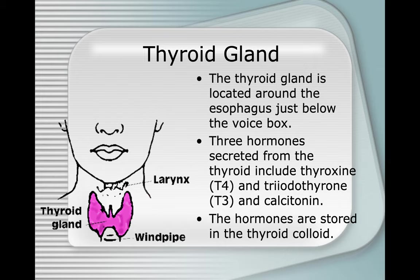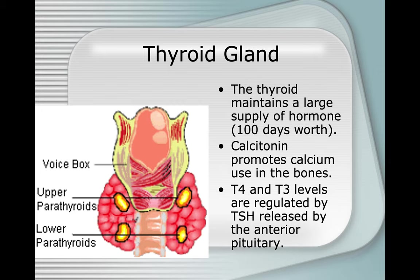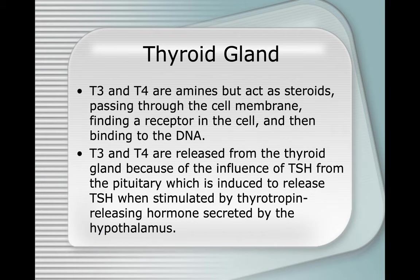The thyroid gland is located around your esophagus, just below your voice box. Three hormones are secreted from the thyroid: thyroxin T4, triiodothyronine T3, and calcitonin. These are stored in the thyroid colloid, and the thyroid maintains about 100 days' worth of hormones. Calcitonin promotes calcium use in the bones. T3 and T4 levels are regulated by TSH from the anterior pituitary. T3 and T4 are amines but act like steroids, passing through the cell membrane, finding a receptor inside the cell, and binding to DNA.